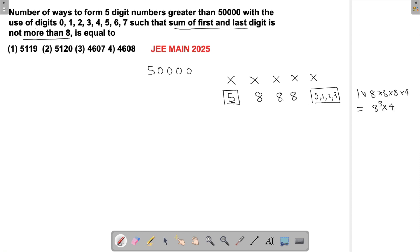But be careful, there will be a number 50,000 which will be coming here if I repeat 0, 0, 0, 0. That should not be taken, so I'll have to subtract one, which we'll do in the end.